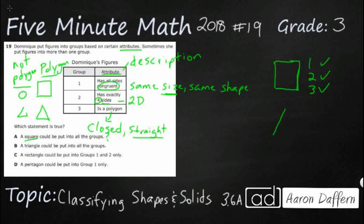A triangle could be put into all three groups. Well, I could draw triangles that aren't congruent, but let's just say I drew my congruent. This is an equilateral triangle. So yes. But look, does it have exactly four sides? No, a triangle has three sides. It is a polygon. So this is not going to work.